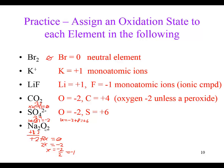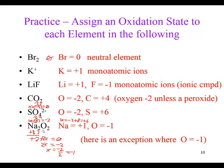In the other oxygen-containing compounds, oxygen is usually a negative two for the oxidation number. This was one of the cases where we did have a peroxide - plus one for sodium and negative one for the oxygens.